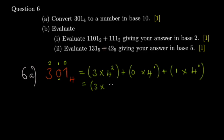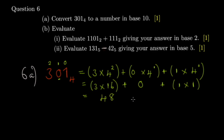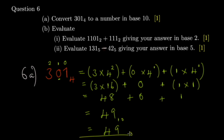Three by four to the power two means four by four, so you get 16. Zero multiplied by any number gives zero. Any number to the power zero equals one — always take note of that so you don't make unnecessary mistakes. So three by 16 gives 48, plus zero, plus one, gives 49. You can write base 10 or just 49, since ordinary numbers are in base 10.